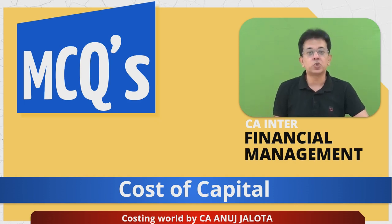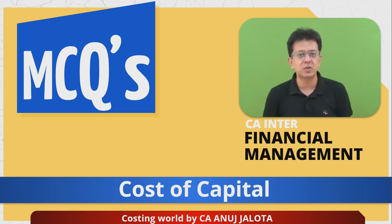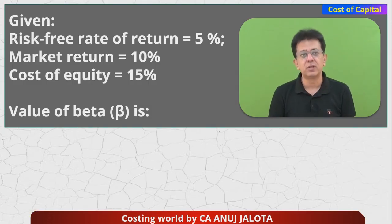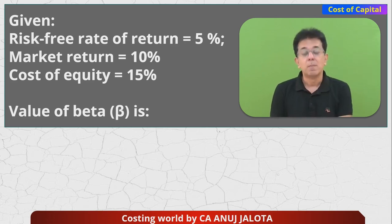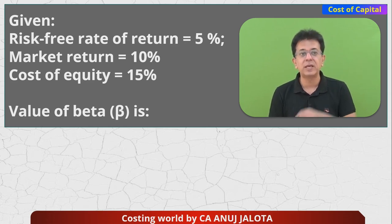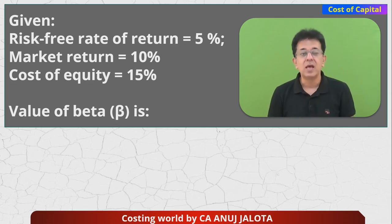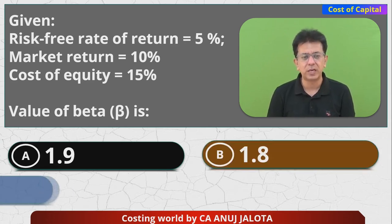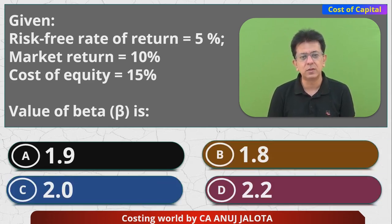Today's question is all about cost of capital. The given values are: risk-free rate of return (IRF) is 5%, market return (RM) is 10%, and cost of equity (KE) is 15%. We need to find the value of the beta factor. The four options are: 1.9, 1.8, 2, and 2.2.